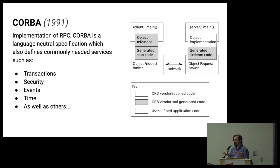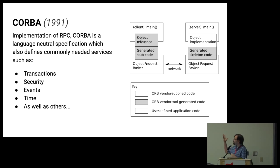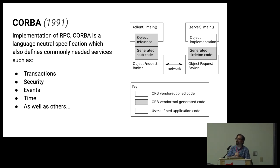CORBA, around 1991, was basically an implementation of RPC. It provided commonly needed requirements for transactions, security, events, and time, among others. It mostly used object references when doing communication — the same simple idea of what RPC is. You still had the stub that allowed you to communicate with the server. The developer supposedly didn't need to know what was happening in the background.